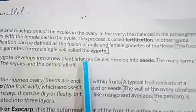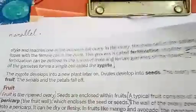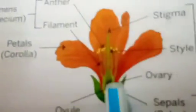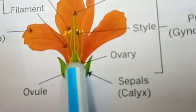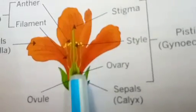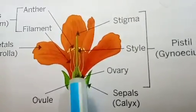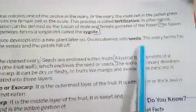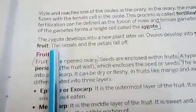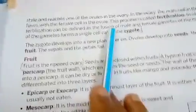Inside the stigma, style, and ovary — which were discussed in the structure of the flower — there are ovules inside the ovary, as shown in the previous video's diagram. These ovules develop into the seeds. The seeds you find inside the fruit are the ovules, and the ovary is actually the fruit that you eat.